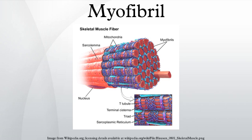Muscles contract by sliding the thick and thin filaments along each other. The filaments of myofibrils consist of two types, thick and thin. Thin filaments consist primarily of the protein actin, coiled with nebulin filaments. Actin, when polymerized into filaments, forms the ladder along which the myosin filaments climb to generate motion. Thick filaments consist primarily of the protein myosin, held in place by titin filaments.